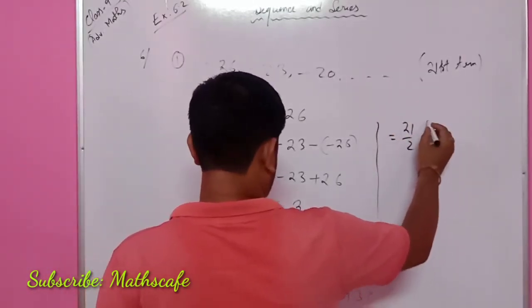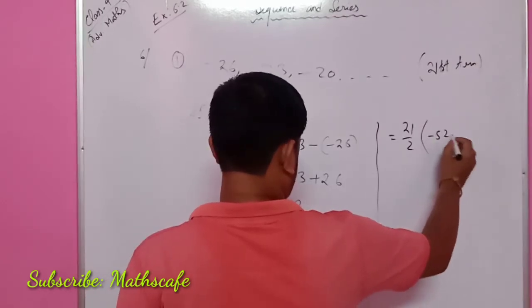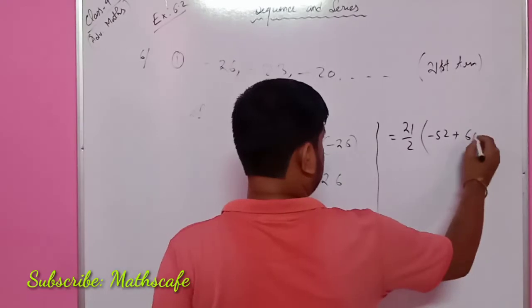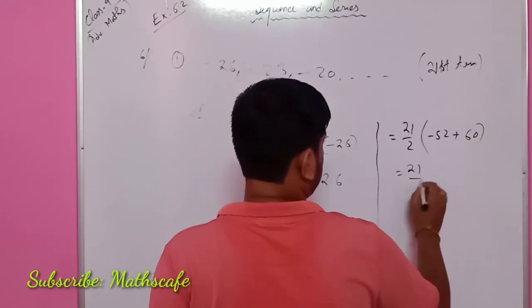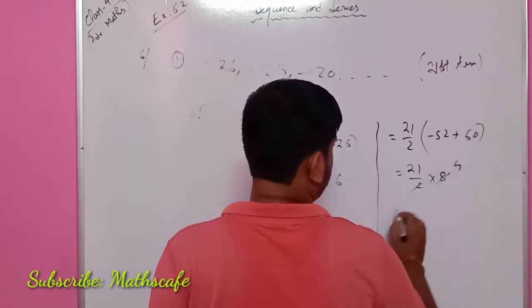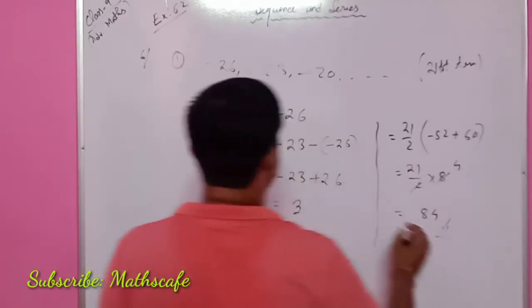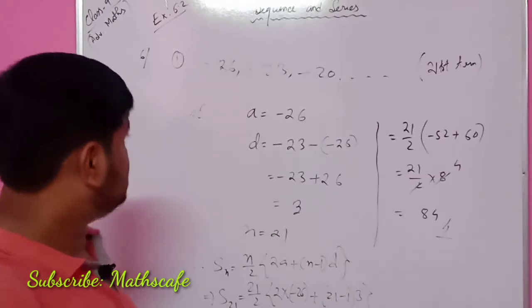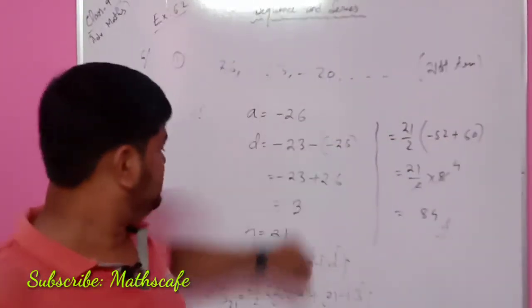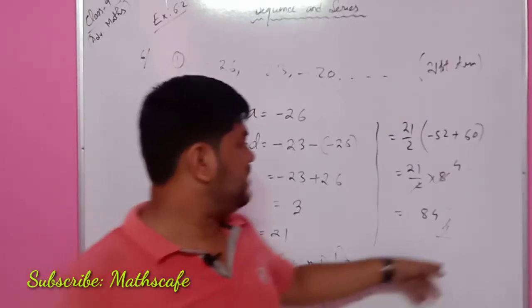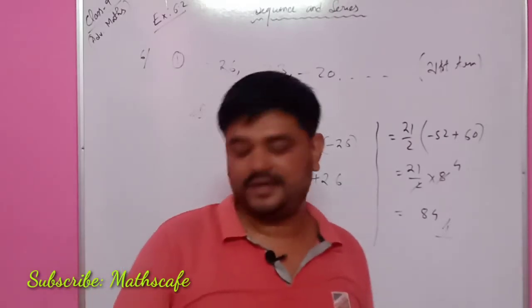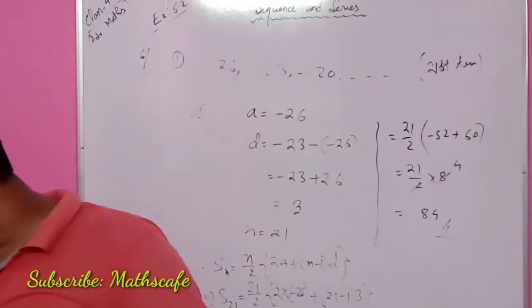1 by 2: 26 into 2 is minus 52, 21 minus 1 is 20, 20 into 3 is 60. So 21 by 2 of 60 minus 52 is 8. 2 is correlated with 4, and 4 is 4 — so this is a sequence, sequence 2 is a series, and up to 21 terms: 3 is 84. So this is the next question number.